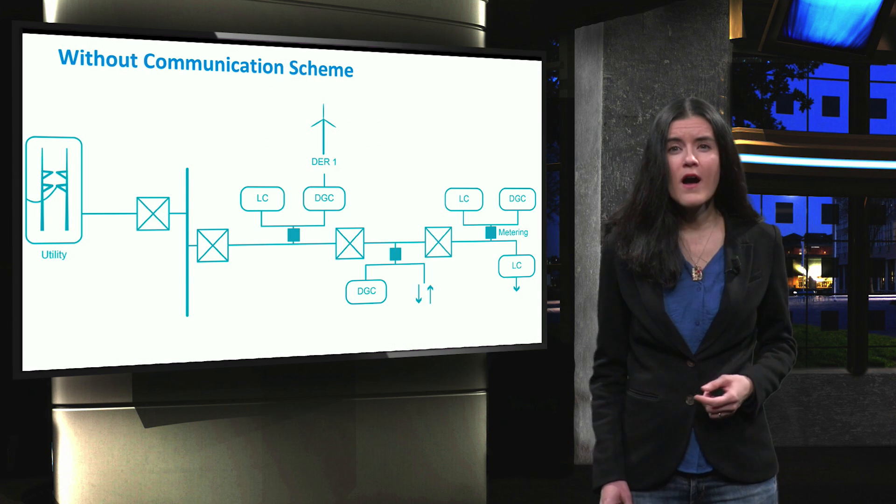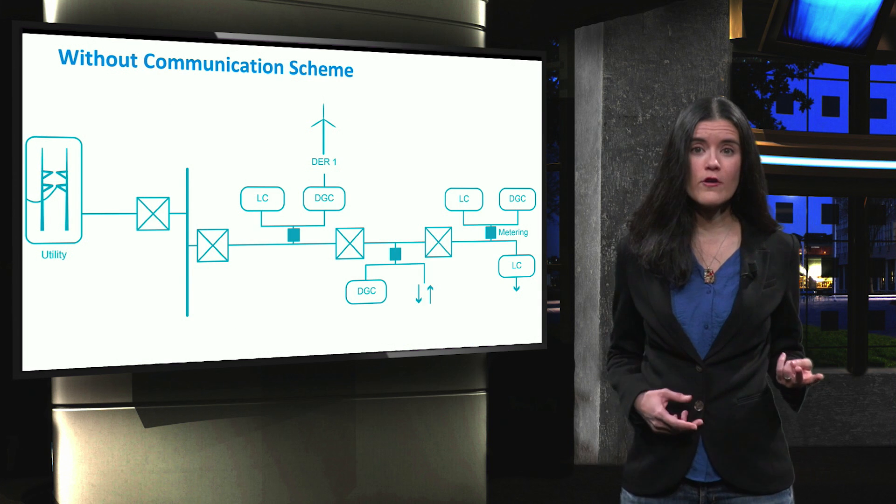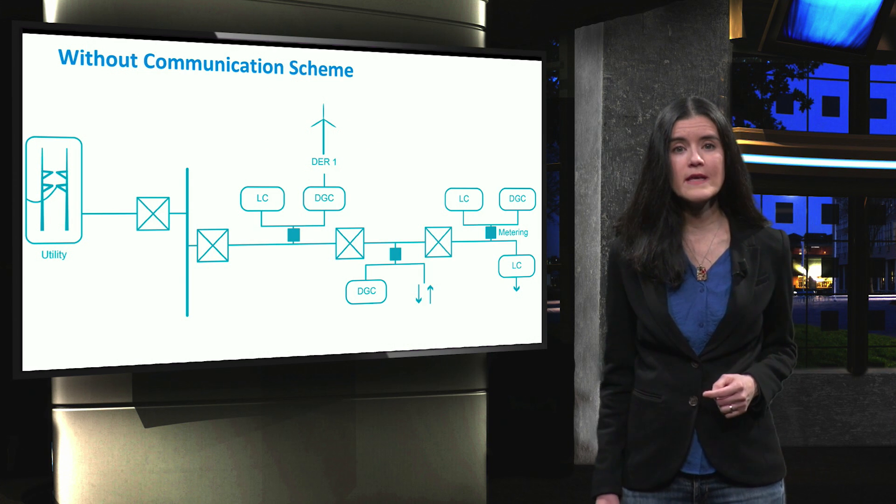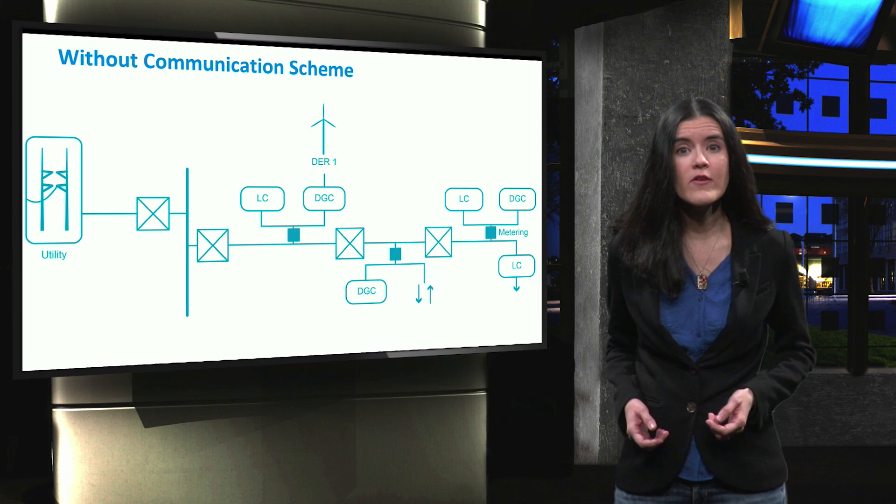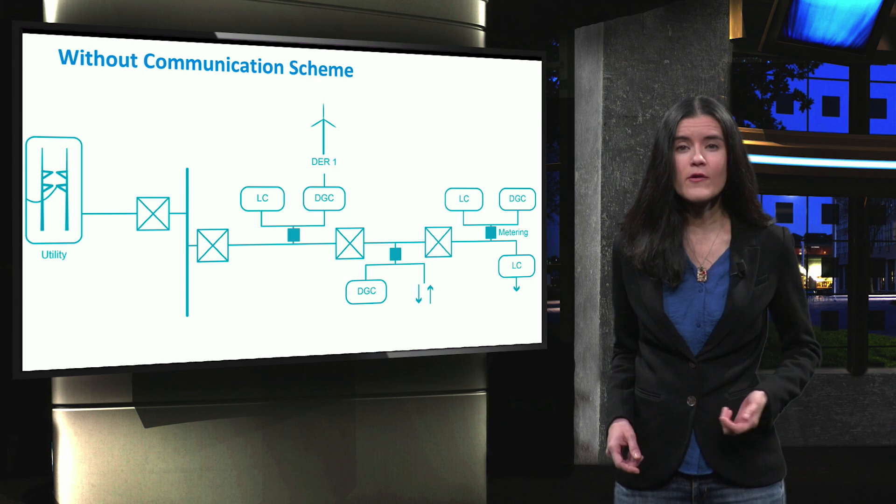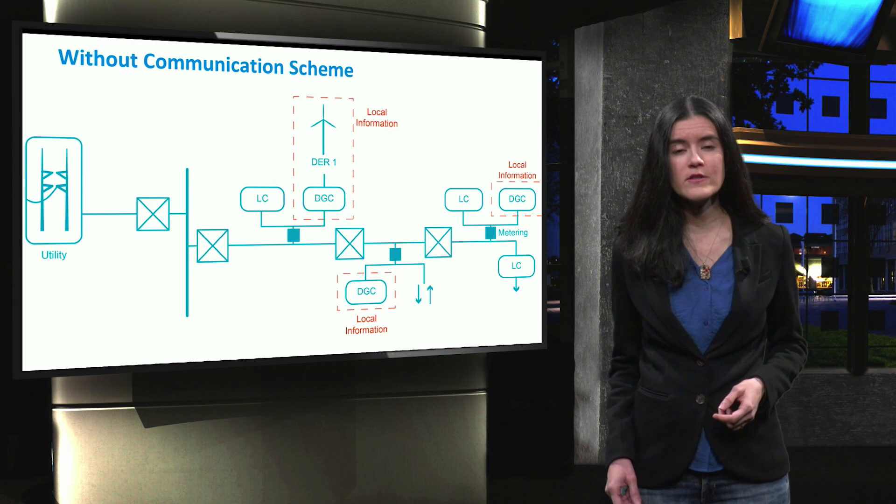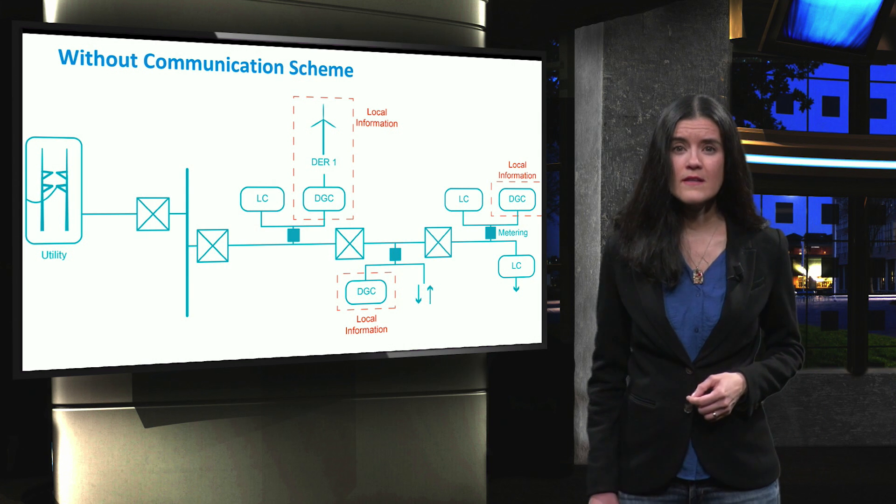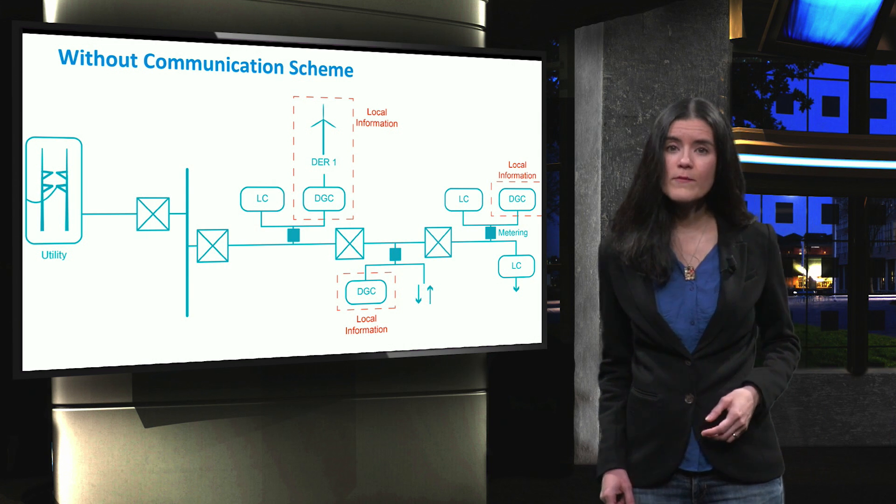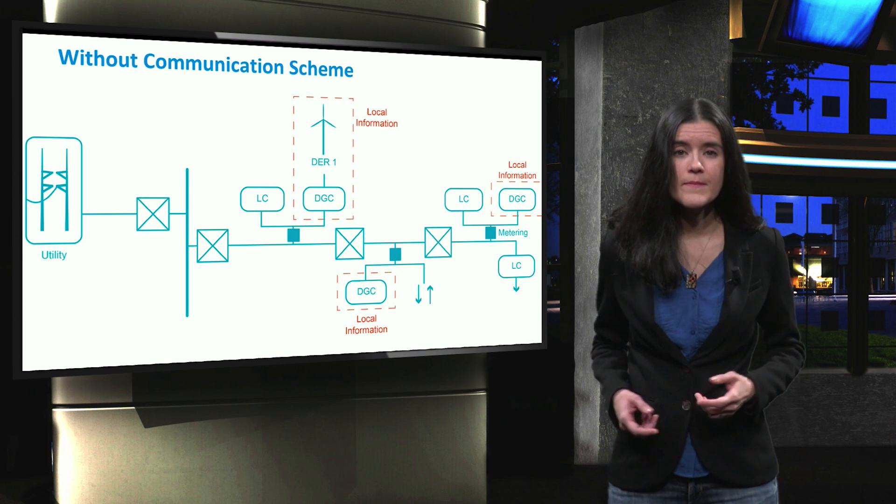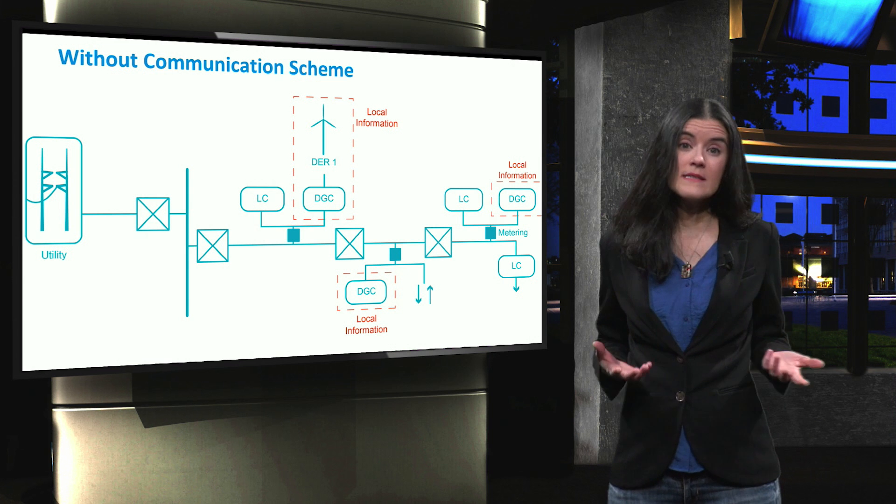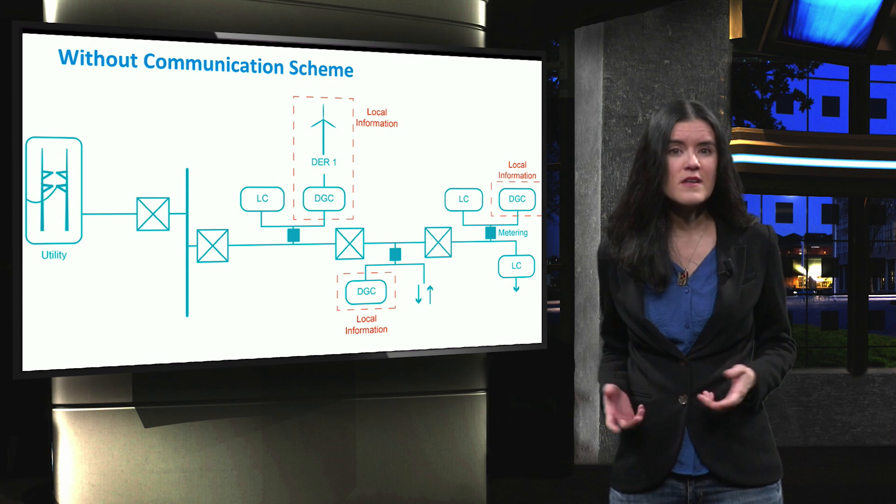Protection schemes are generally divided into two groups, with and without communication. In the no-communication scheme, the time-current tripping curve of the relays in the microgrid is set based on the local information. The selectivity in the scheme is low, since the decisions are based on local information instead of the whole microgrid. The advantage of such protection scheme is the lower cost, as the computational and ICT costs are not in place.